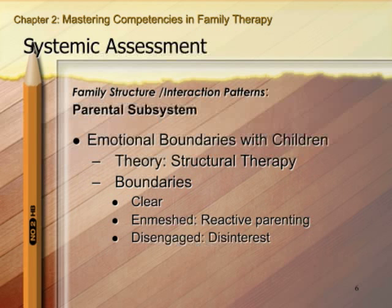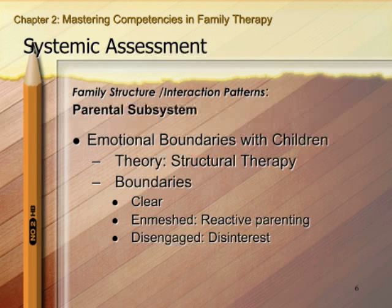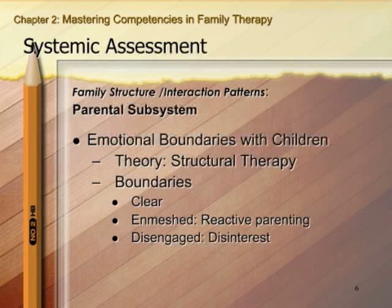Disengaged parental boundaries generally take the form of being disinterested or not responsive enough to the child's needs. A disinterested parent may be permissive simply because they don't want to work hard at setting limits — it's disconnection that drives the permissiveness. The authoritarian disengaged parent is more the classic form: laying down rules, not wanting to hear from the kid, with a real emotional distance from the child.